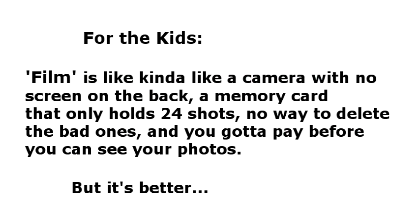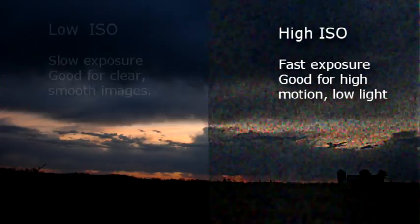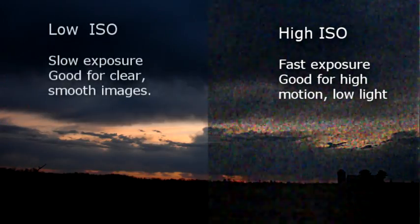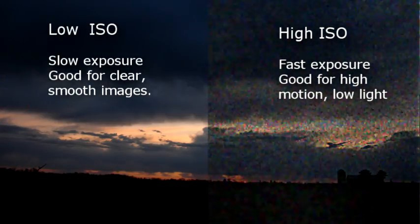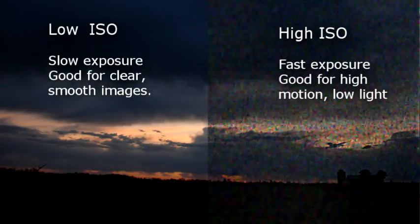In the old days of film, different kinds of film had different sensitivities to light. Some film needed almost no light at all — it was very sensitive, but it gave you rough, coarse, grainy images. Other kinds of film gave you beautiful, clear, smooth results, but it needed a lot of light to see anything.